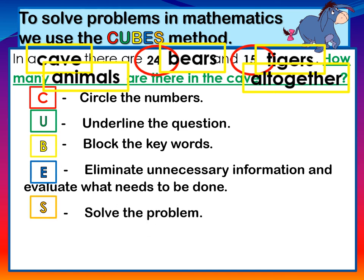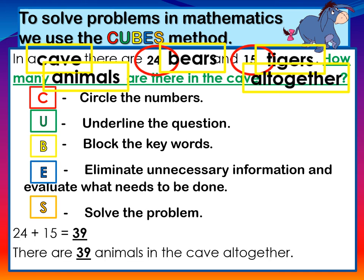S is for solve. Solve the word problem. We would have realized, boys and girls, that this word problem would require us to add. So we do an addition sum: 24 plus 15. When we work it out, we arrive at the answer 39. And we answer the question: There are 39 animals in the cave all together.